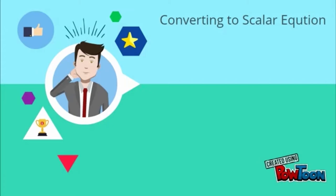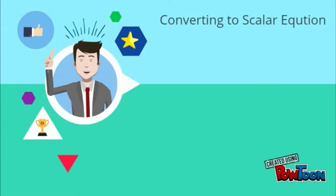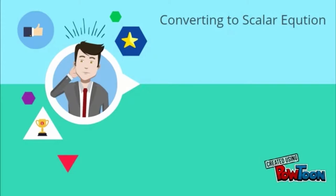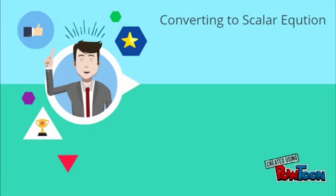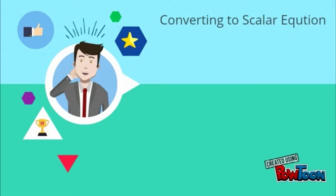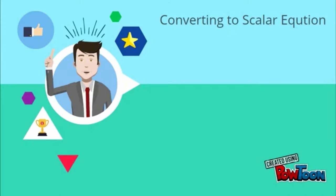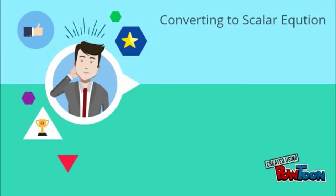Once we find and calculate the normal vector, we can form the scalar equation. The s and t values are the non-parallel direction vectors parallel to the plane. They can be used to form the normal vector using the cross-product method. I've used different colors to show a better visual of the multiplication. Once we have the normal vector equal to bracket a, b, c, we substitute the points into the scalar equation.